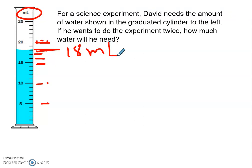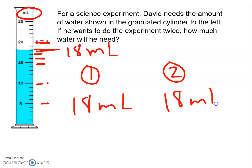But it says he wants to do, if he wants to do the experiment twice, how much water will he need? So that means the first time he wants to do the experiment, he needs 18 milliliters. And the second time he wants to do the experiment, he needs 18 milliliters.